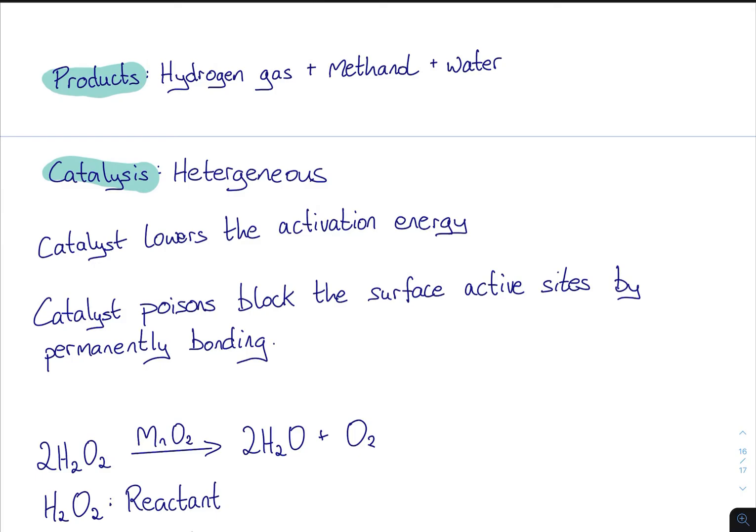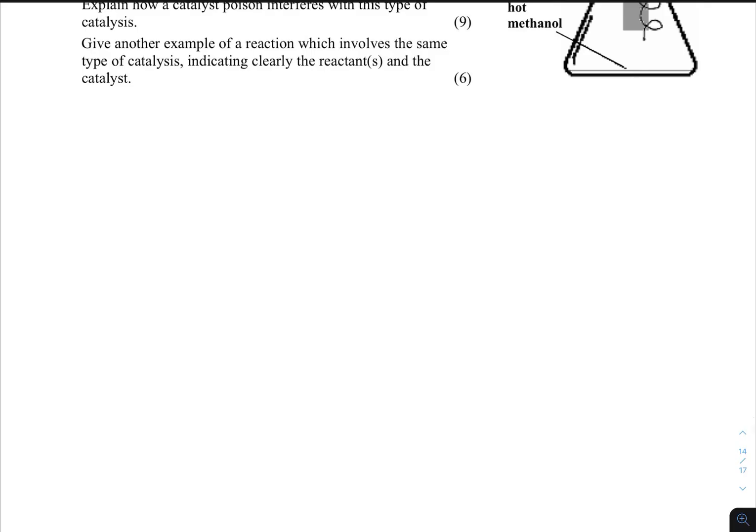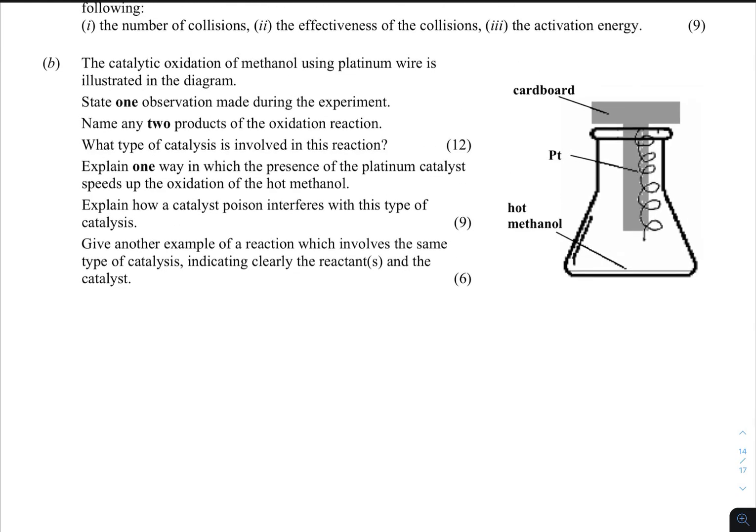Explain how a catalyst poison interferes with this type of catalysis. We've seen that one before again. The catalyst poison blocks the active sites on the surface, and it does so by permanently bonding. That's a problem.